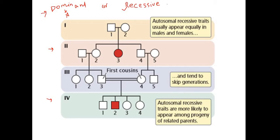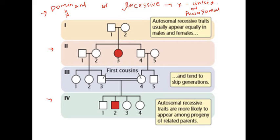The second thing to determine is whether it is autosomal recessive or X-linked recessive. A major feature of X-linked disorders is that males are more affected than females. Also, for X-linked disorders, an affected female typically has an affected son. Here, males and females are equally affected, and in generation 4 a son is affected but the mother is not diseased, so this cannot be X-linked. Therefore it is an autosomal disorder.